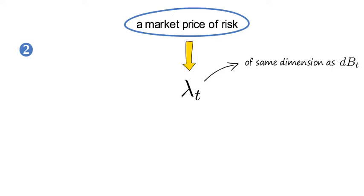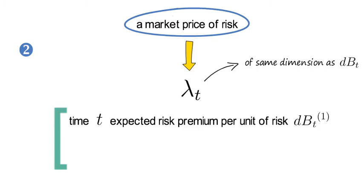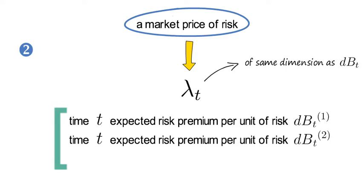So lambda t is of the same dimension as dBt. So its first entry quantifies the time t expected risk premium per unit of dB1 risk. The second element of lambda t captures the time t expected risk premium for one unit exposure to the second element of dB, and so on.